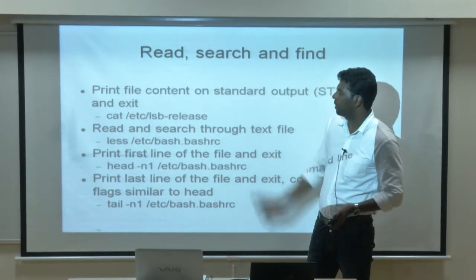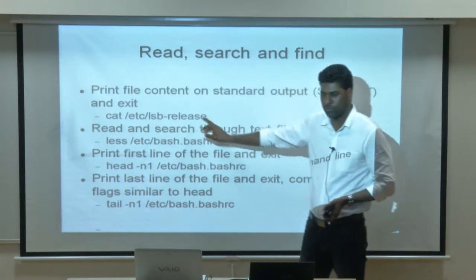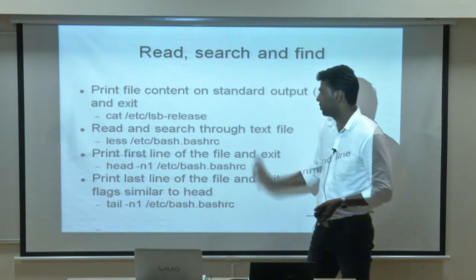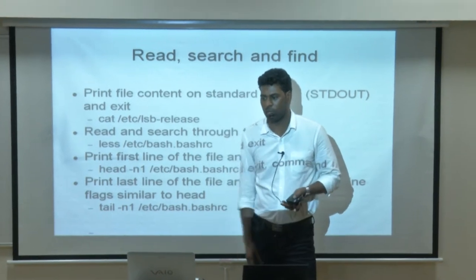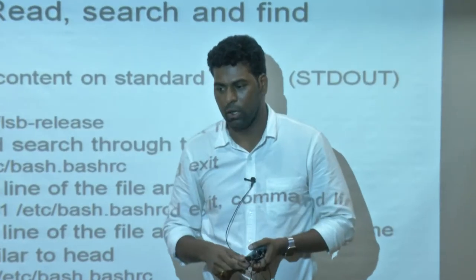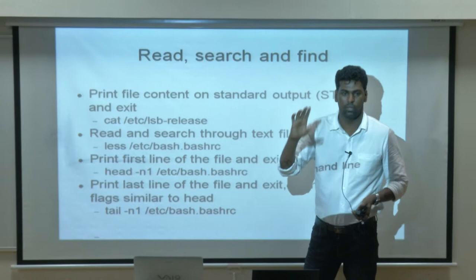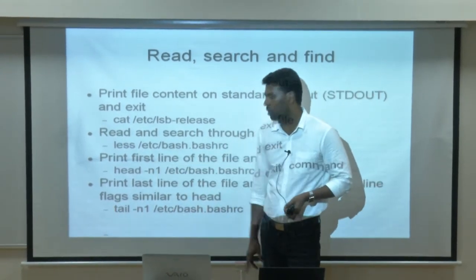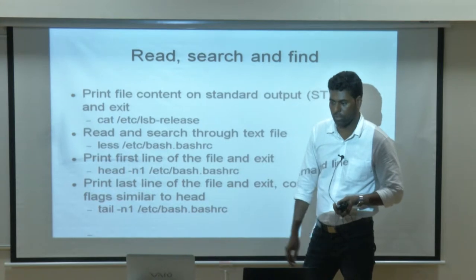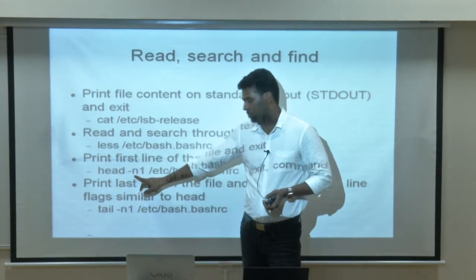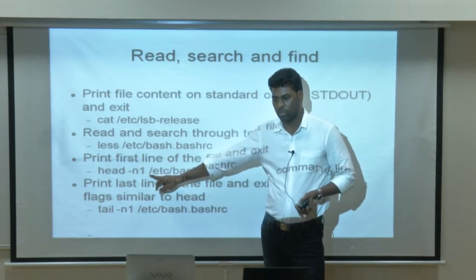To print file content, use cat followed by the filename — it is very useful. To read a large text file with thousands of lines, use less, which displays content page by page in the window size. If you want to print particular lines, use the head command for the first lines of a file. For the last lines, use tail. To print a middle range of lines, combine head and tail with a line number.